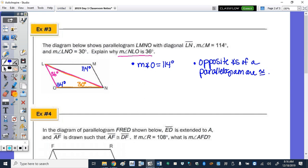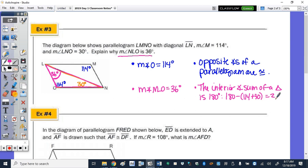And now I can state that this angle is 36, and LNO is 36 degrees, because that was the interior angle sum of the triangle, LON. So the interior angle sum of a triangle is 180 degrees. So 180 minus the 114 plus 30 is 36.